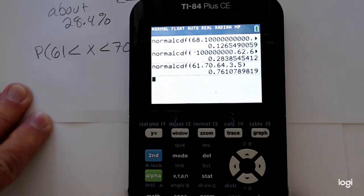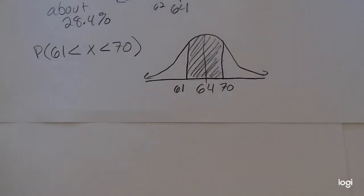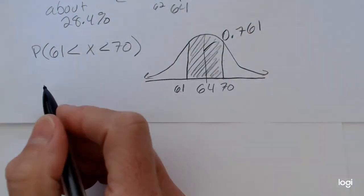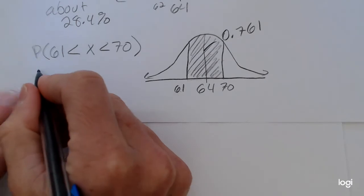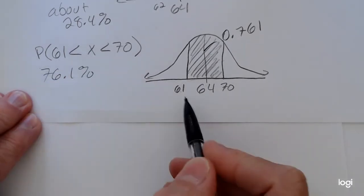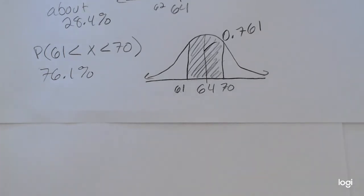Rounding to three decimal places, I get 0.761. So about 76.1% of the population of women have a height that falls between 61 and 70 inches.